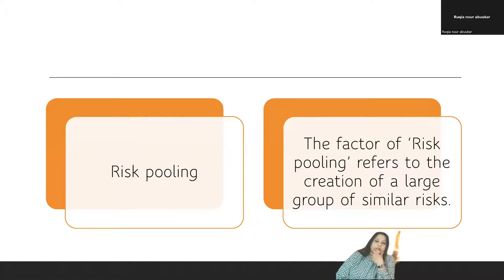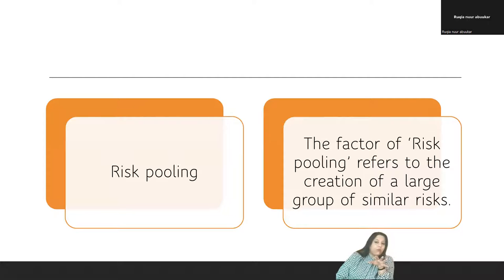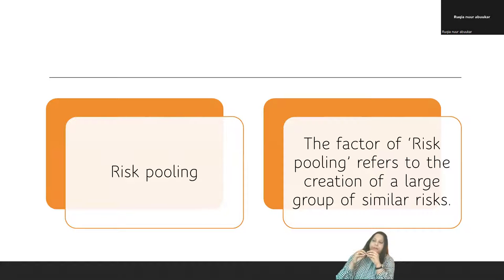The next part is risk pooling. What is pooling? It is gathering. So here we are talking about pooling of risk. The factor of risk pooling refers to the creation of large groups of similar risks. They pool the risk together, define it, calculate it, and come up with devising premiums and policies.